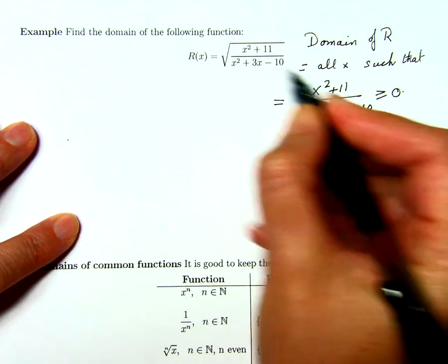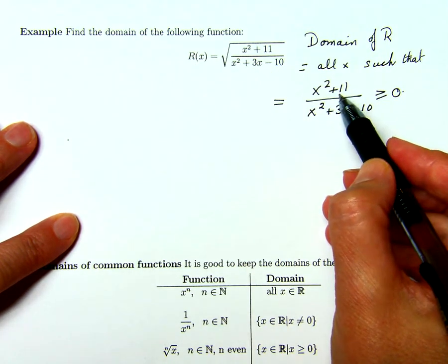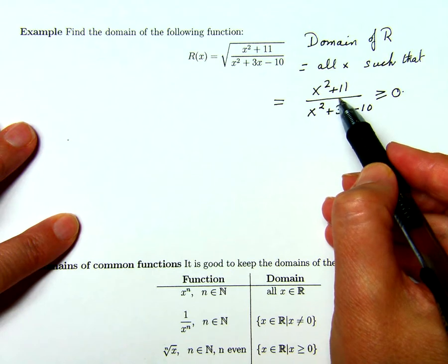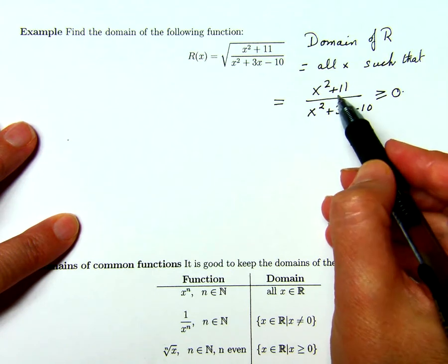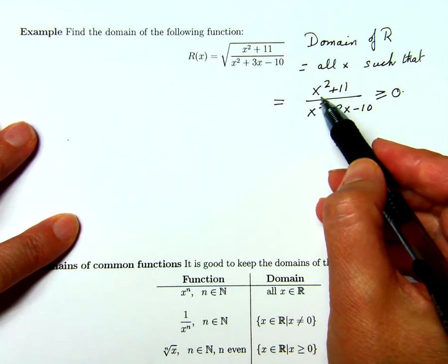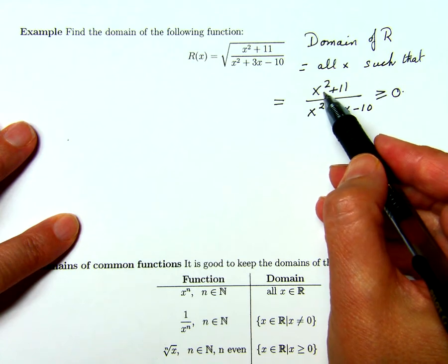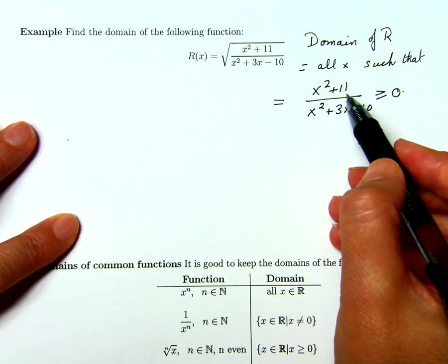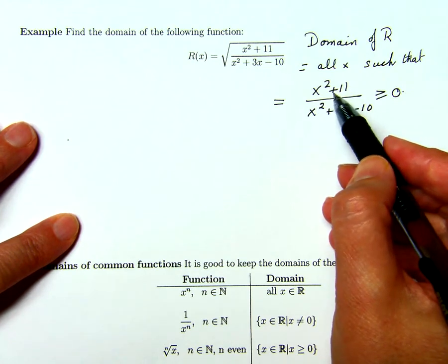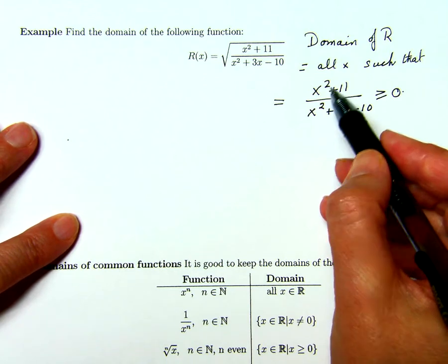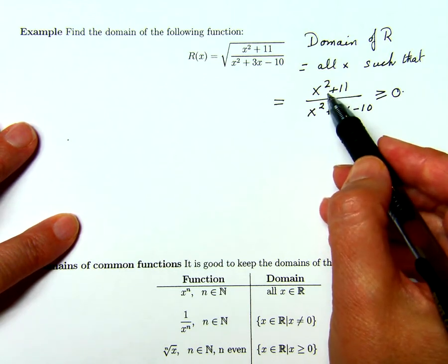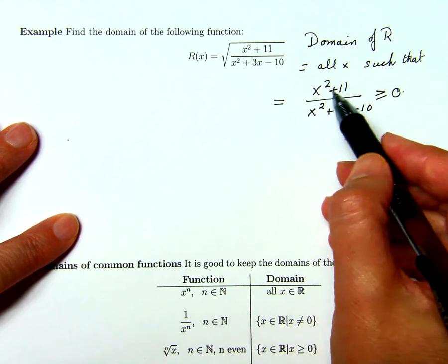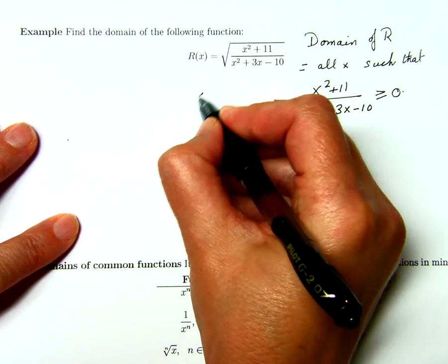Factorizing this, we get x squared plus 11 does not factorize because we would have to have x values where x squared equals minus 11, and that's not possible. If you like, you can also calculate the discriminant of this quadratic and you'll see that it's less than zero, so we have no factors here, so that's irreducible.